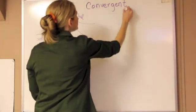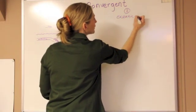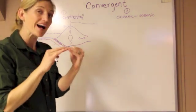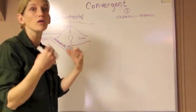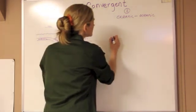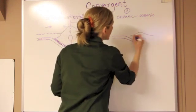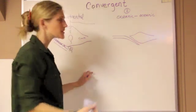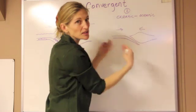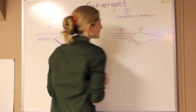The second type is oceanic-oceanic convergence, where two plates come together and at the point of contact both plates are oceanic. It looks very similar, except the mountain isn't going to be quite as big. When these two plates are coming together, one of them is forced down and the other one overrides — it kind of gets built up and squished together. Because they're both oceanic, we're going to see ocean on both sides.